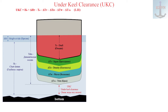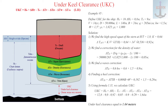Example number 5 shows step by step how UKC is calculated for a vessel with the following characteristics shown on screen. Step 1: we find the high-speed squat of the stern at approximately 0.92 meters. Step 2: we find a correction for the density of water. Step 3: we find the wave correction, equal to 0.9 meters. Step 4: finding the heel correction, equal to 0.29 meters. Step 5: using formula 1.11, we calculate UKC. Under keel clearance equals 1.64 meters.